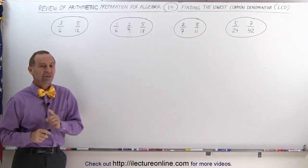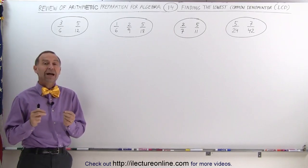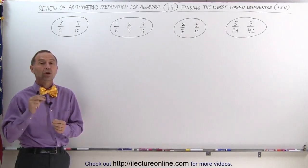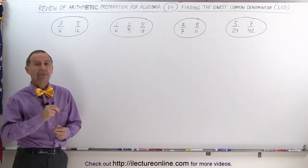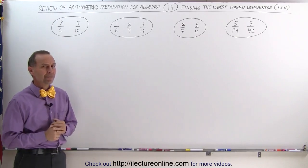When the denominators are the same, it is really easy to add and subtract fractions. But when they're not the same, we need to find what we call the lowest common denominator, the LCD.